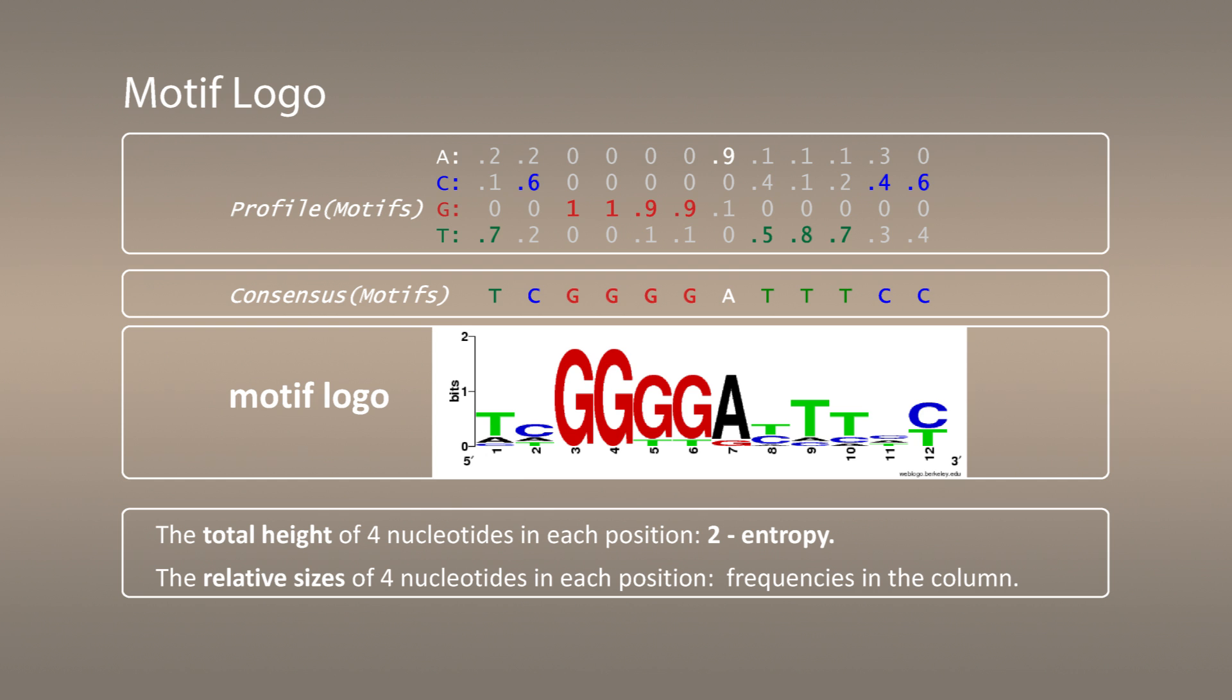It shows the most conserved elements of the motif. The relative sizes of four nucleotides in each position correspond to frequencies of these nucleotides in the column. So now this is an example of motif logo. Now let's see how it works for the tuberculosis example.